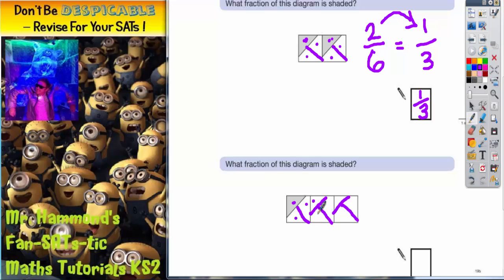we've got one, two, three, four, five, six, seven, eight, nine sections. And out of those nine, we've only got one section that's shaded in. So the answer here is going to be one ninth.